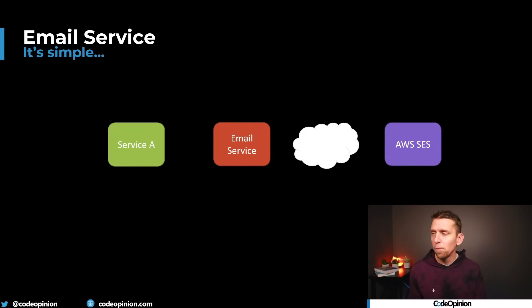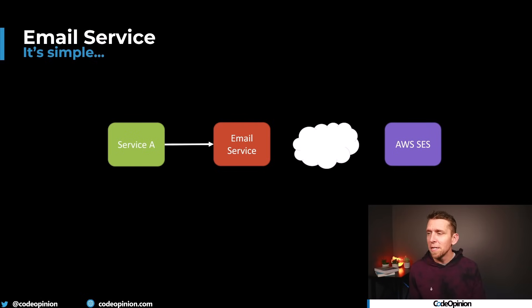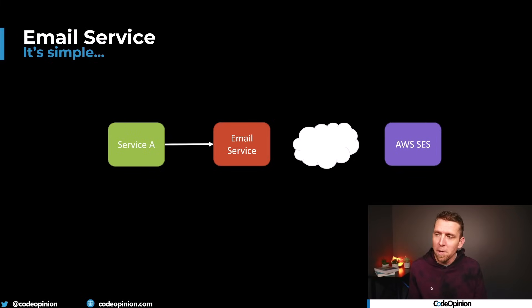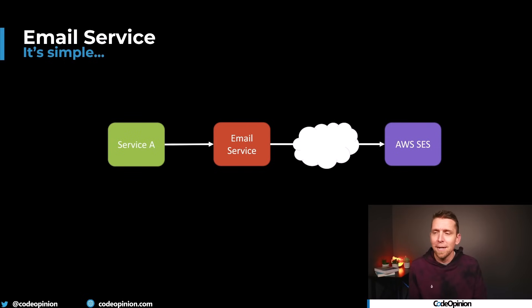Keeping the diagram simple, it could just be Service A requesting to send out that email to the email service. We could have queues and messaging in here, but ultimately you're saying 'do this' and then the email service is the one contacting AWS SES or SendGrid, whatever. Now there's a major downside with both of these approaches.